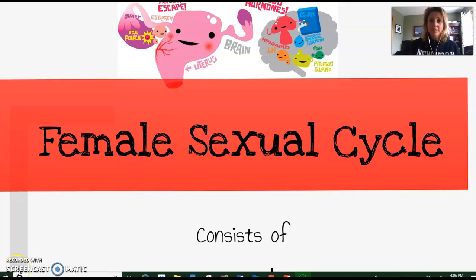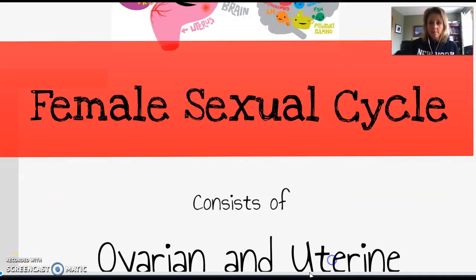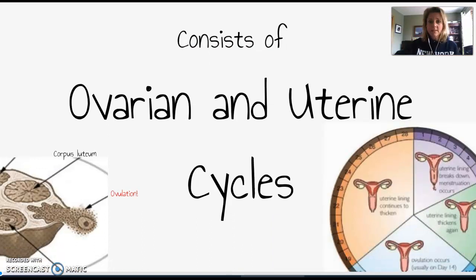Hello, anatomy students. Today we're going to talk about the female sexual cycle. It consists of two smaller cycles: the ovarian cycle and the uterine cycle. The ovarian cycle is going to focus on events that are happening in the ovaries, while the uterine cycle is going to focus on what's happening in the uterus.